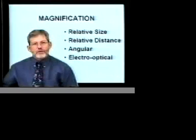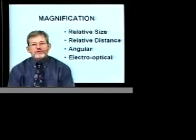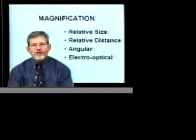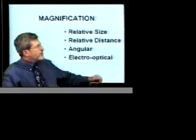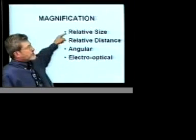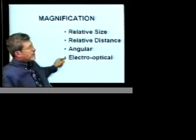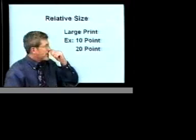We're going to complete our work on the module of the optics of the eye by discussing for just a few minutes the issue of magnification. We all know what magnification is — it's taking something which is actually one size and creating the impression that it is in fact much larger. This is typically done with glasses, with optical systems. We have four types of magnification: relative size magnification, relative distance magnification, angular magnification, and electro-optical magnification. We're going to take each one of these individually.